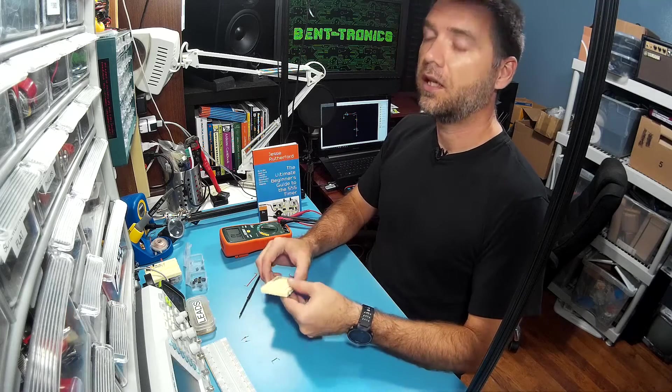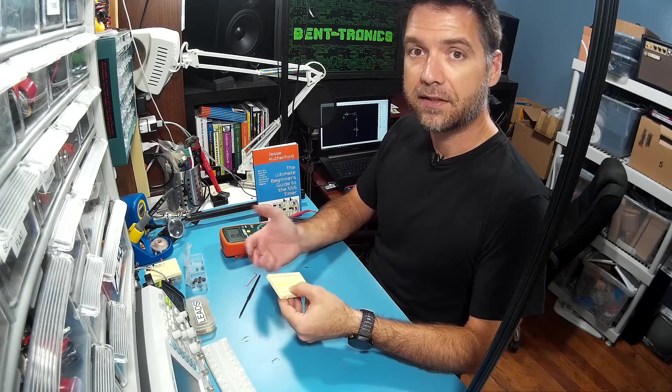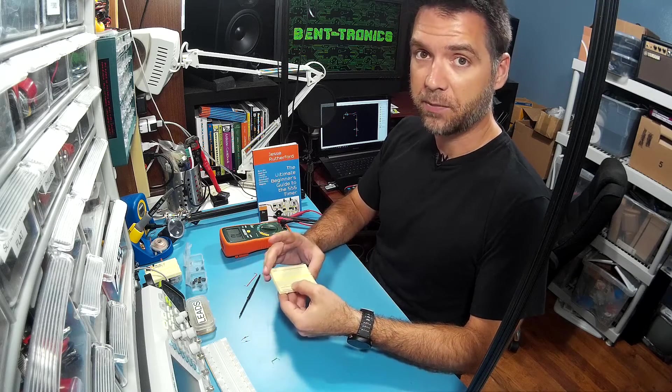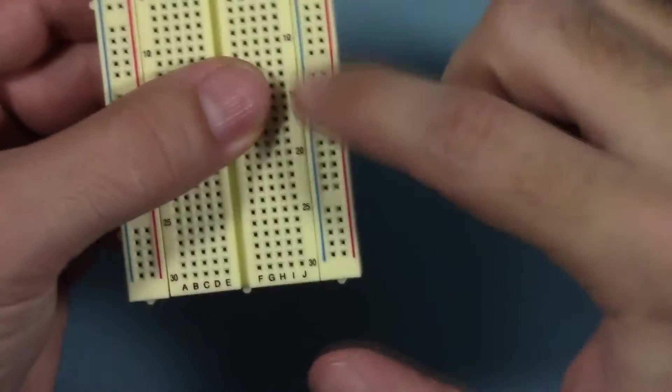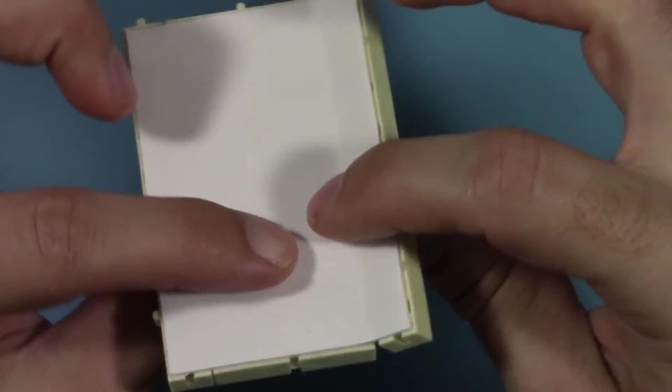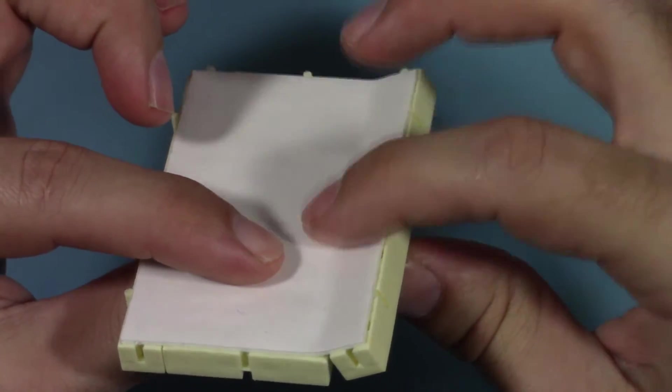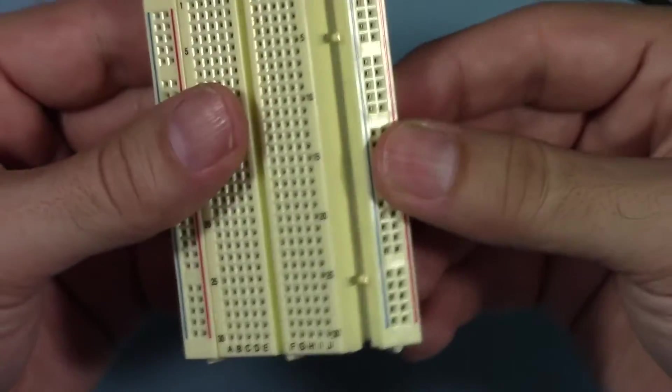Another quick note too, I mentioned the different sizes. This actually can be made bigger or smaller. A lot of people don't necessarily know this, but these rails usually will break away. So this is just some sticky double-sided tape on the back side and holding this together.